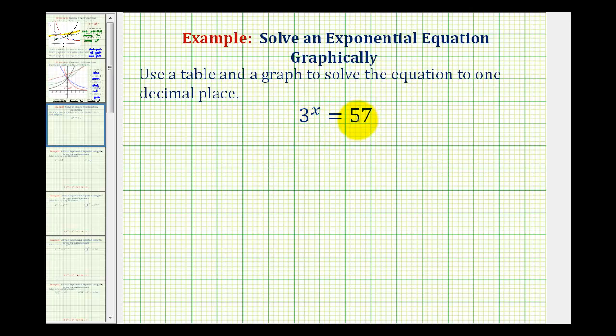Notice how if we could write 57 as 3 raised to some power, we could find the exact value of x, but since we can't, we're going to find an approximate solution. We will learn how to solve this type of problem using logarithms very soon, but for right now, we're going to use technology.